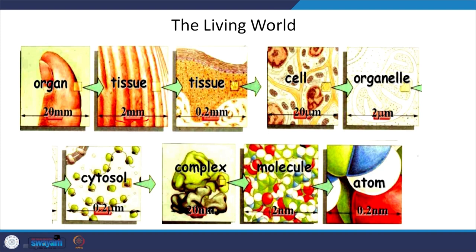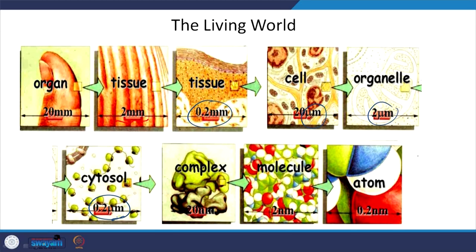In the living world, we have organs — say for example a thumb — which have tissues of the order of a couple of millimeters. These tissues are made up of cells which are of the order of micron size, and cells are made up of organelles. For example, a mitochondrion is about 2 microns. They are composed of even smaller entities such as cytosol at about 0.2 microns, and complexes of a few nanometers — say 20 nanometers — comprised of molecules about 2 nanometers in size, and atoms at about 0.2 nanometers. These are the length scales in the living world.